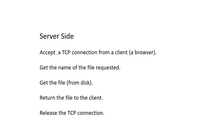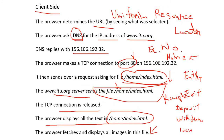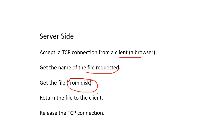Now, what happens at the server side: the server accepts a TCP connection from a client browser, gets the name of the file requested, then fetches the file from the disk — as we discussed in the figure. Then the server returns the file to the client and releases the TCP connection.